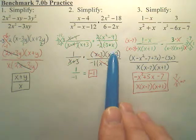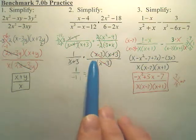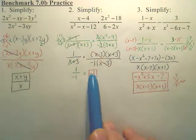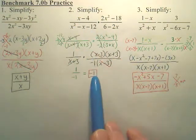Anywho, so those cancel, and then the x plus 3s cancel, leaving you just 1 over negative 1, which is negative 1. So everything cancels to negative 1, which is kind of crazy. This whole big thing is negative 1.